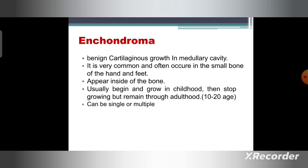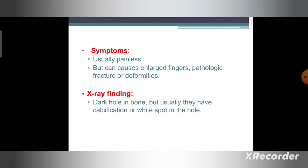It is very common and often occurs in the small bones of the hand and feet. It appears inside the bone, is usually benign, and grows in childhood, then stops growing through adulthood, approximately at age 10-20. It can be single or multiple. Symptoms are usually painless but can cause angled fingers, pathological fractures, or deformities. X-ray findings show a dark hole in the bone, but usually there is calcification or white spots in the bone.